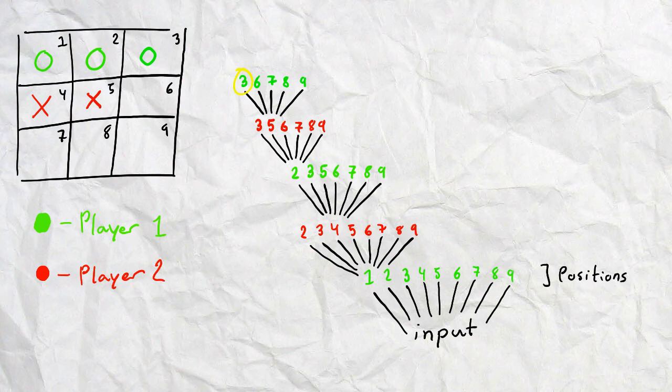Now notice that this branch will actually lead to you winning. Therefore, we can say that this branch, this very specific branch, has a plus one in outcome.